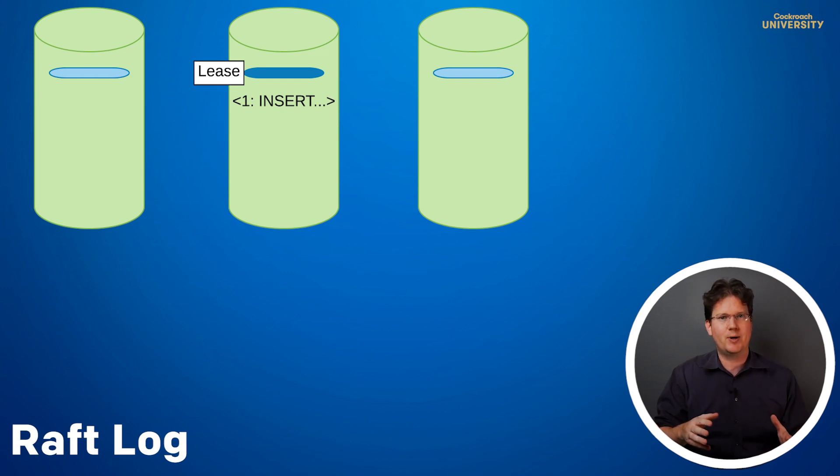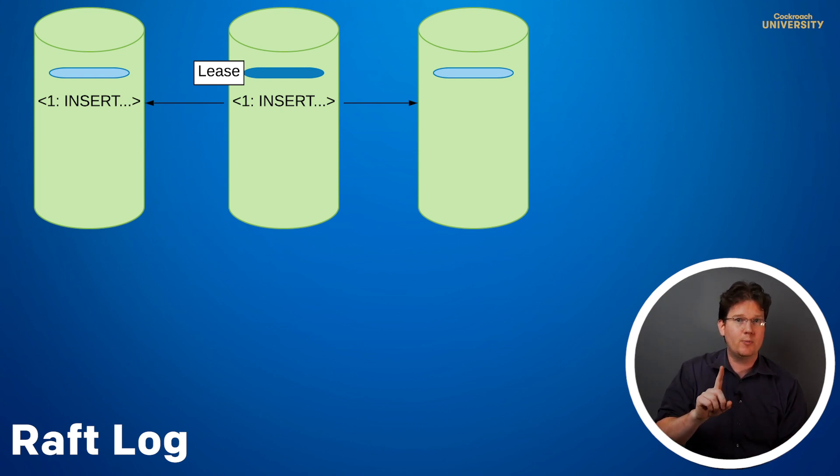The leader then proposes the write to the followers. Each follower will replicate the command on its own Raft log. I showed only one replication so far, since that's enough for a majority. Even without hitting the third node, the write will persist through any single node failure.